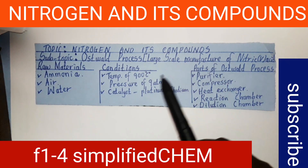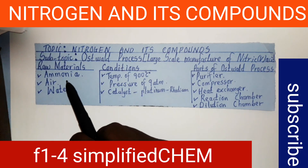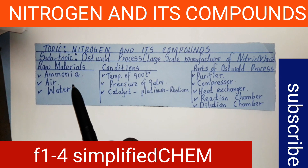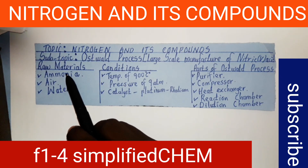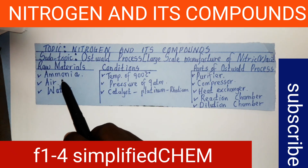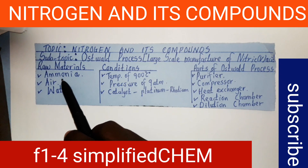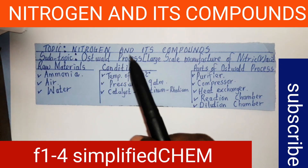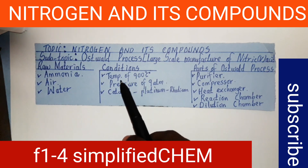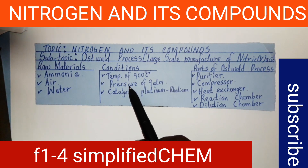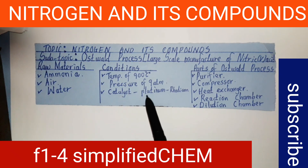Then you know how to explain how the reactions take place in each of those parts. Now I want to look at step number one: the raw materials required to manufacture nitric acid. The first raw material is ammonia, which is obtained from another process, then air, and then water. The conditions required are a temperature of 900 degrees Celsius, pressure of 9 atm, and the catalyst used is platinum-rhodium.